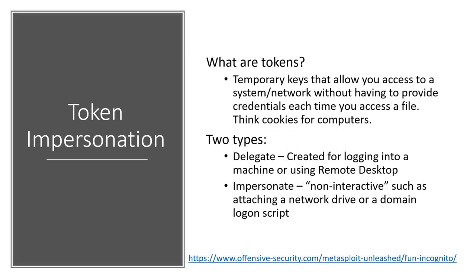Let's talk about our third item on the list — we'll do a mixture of live demo and PowerPoint. The third one is called token impersonation. Tokens are temporary keys that allow you, a system, or network access without having to provide credentials — they're basically cookies for computers. There are two types of tokens: a delegate token and an impersonate token. If you log into something like Remote Desktop, you're using a delegate token. If you're doing something non-interactive like attaching a network drive through a logon script, you're using an impersonate token.